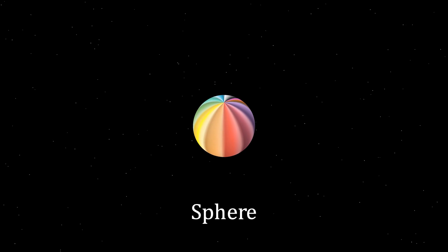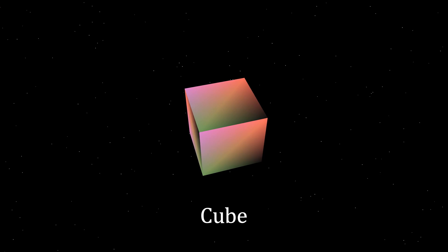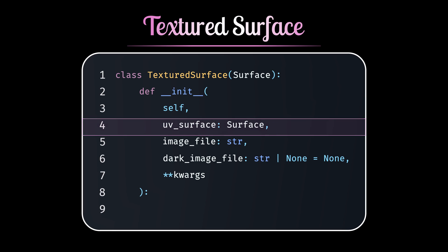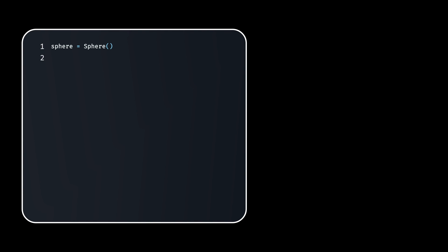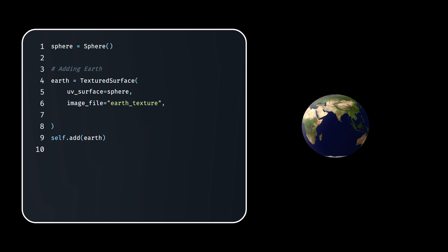Moreover, Manim GL has some built-in common types of surfaces. Let's take it up a notch and apply some realistic effects to the surface. One way to achieve this is by using texture surface class. The texture surface class requires a UV mapped surface and texture image files as its parameters. For instance, if I want to create a spherical earth, I can use Manim's sphere class and apply an earth texture as an image file. See, the image texture wraps perfectly around the surface of the sphere.